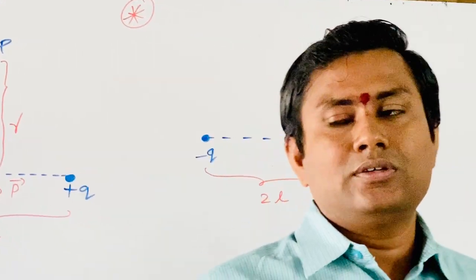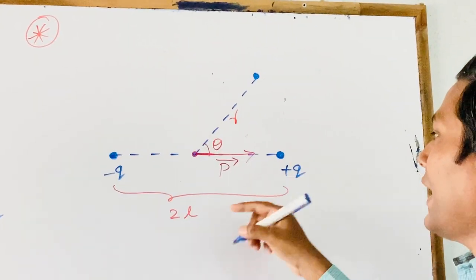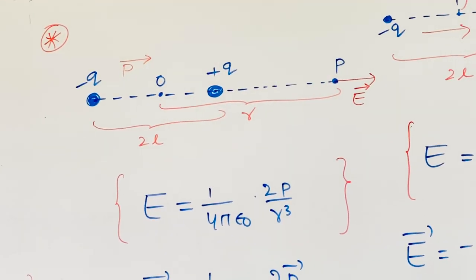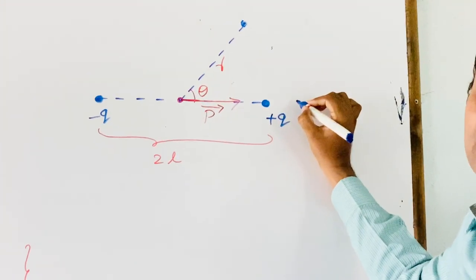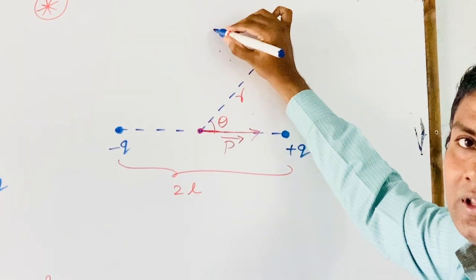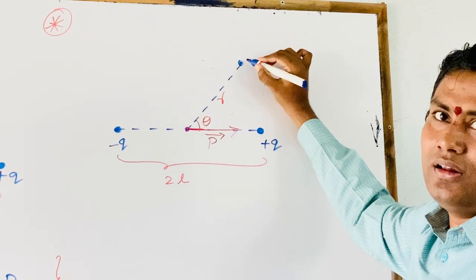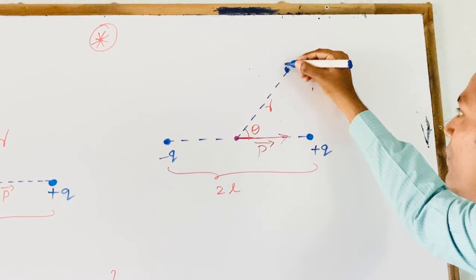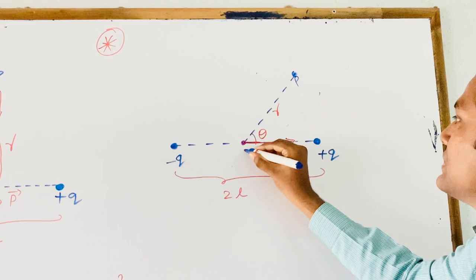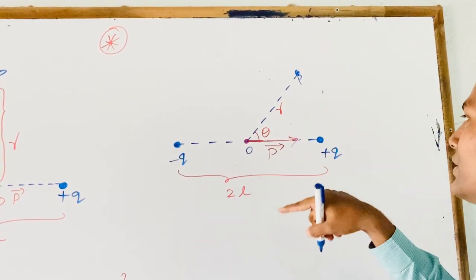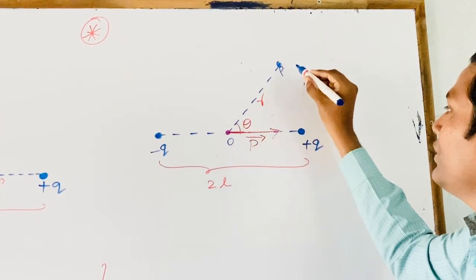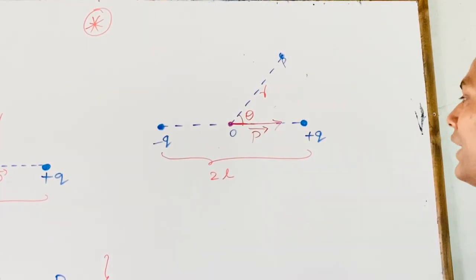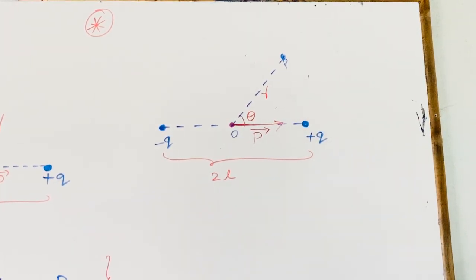Now we take some arbitrary point P as shown in the figure. This is also a dipole of the same length as in the previous two key ideas. This point P is not lying on the axis of the dipole, and not lying on the perpendicular bisector. Point P is at some angle theta, where theta is the angle between the line OP connecting point P with the center of the dipole, and the direction of P̄. Now we want to calculate the resultant electric field at this point.